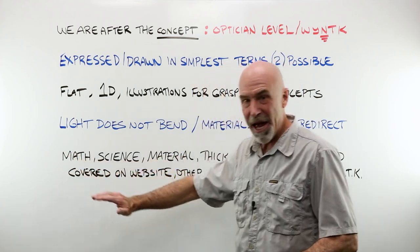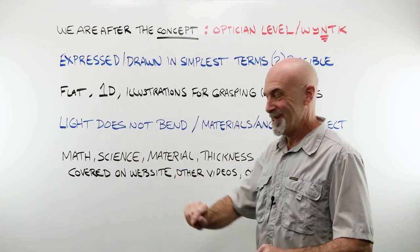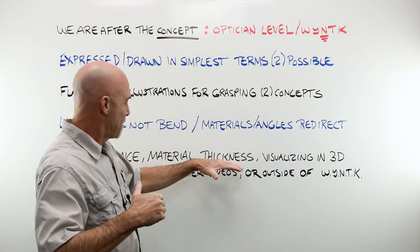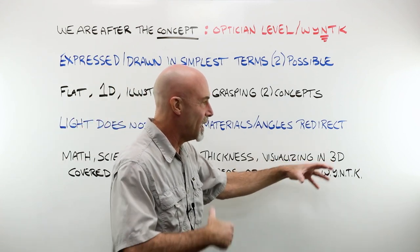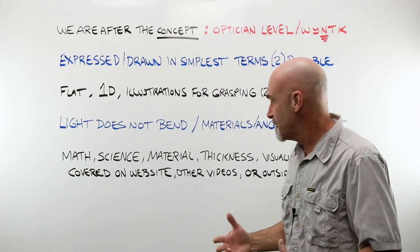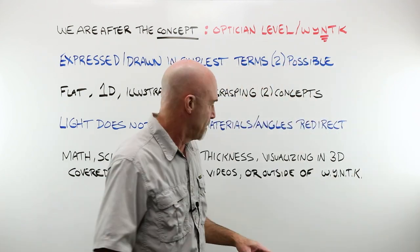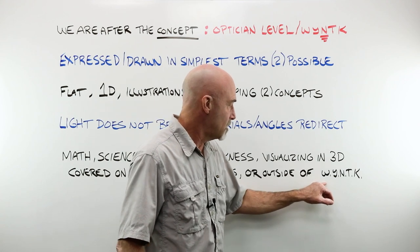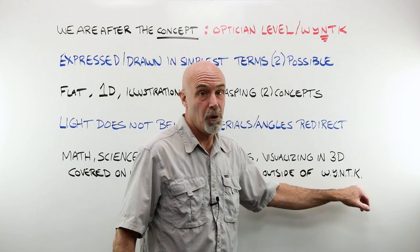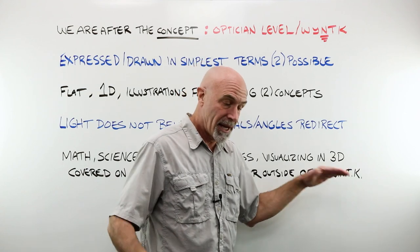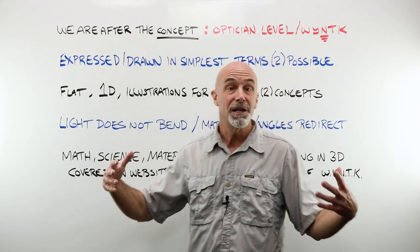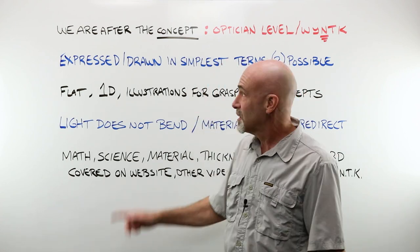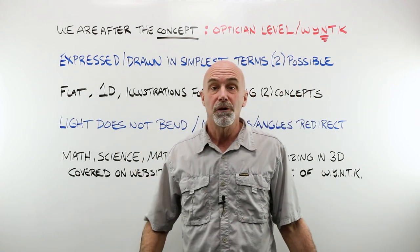The math, some of the math. The science, some of the science. We talk about material that lenses are made from, the effect of thickness, helping you visualize what is all happening in three dimensions. That's covered on the website, it's covered in other videos, or, and this is so important, it is outside the range of what you need to know to be a competent optician. We're not studying to be optical engineers, we're not studying to be physicists, we just need to be a competent optician, and these are two concepts that are critical for understanding.